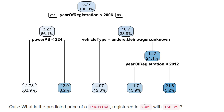If we had the same car but registered in 2005, we would go through the tree differently. The first condition would be yes, so we continue on the left-hand side. With 150 PS, the condition — is PS smaller than 224 — is also satisfied. We would then predict a price of 2,700 euros, and 62.9% of the observations fall into that leaf.